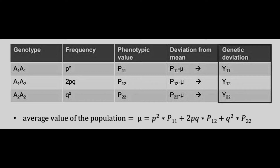The genotype A1A1 will have the frequency p squared. The A2A2 genotype will have q squared, and for A1A2 these may be present two times. So we calculate pq plus pq and simply represent them as 2pq. In a case where the frequency of a certain allele is provided, we can calculate the other by subtracting it from one.